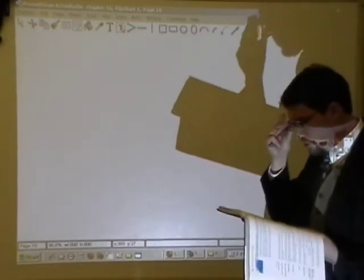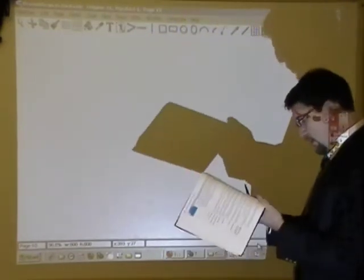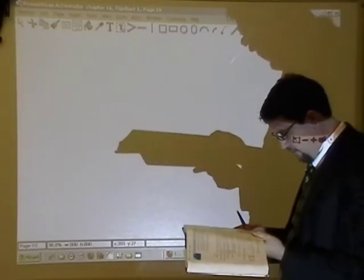All right, so we are on page 381 of the book, and we're going to look at number one. It says expected value. Find the expected value of each random variable.